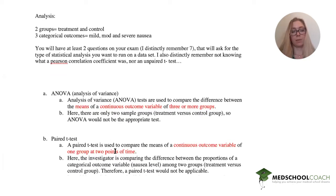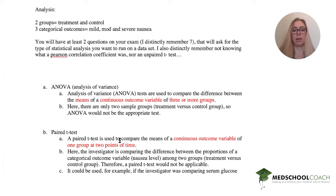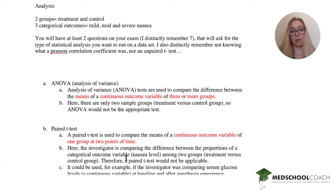A paired t-test is used to compare the means of a continuous outcome variable of one group at two points of time. Here we're comparing the proportions of categorical groups. That's another thing that the ANOVA doesn't have. It's not categorical. Here we're comparing categorical outcome variables.